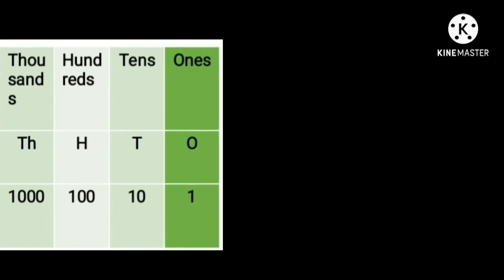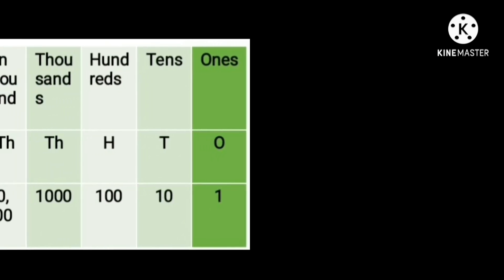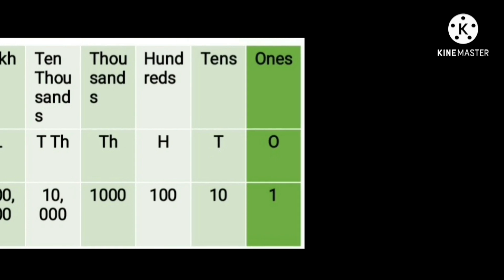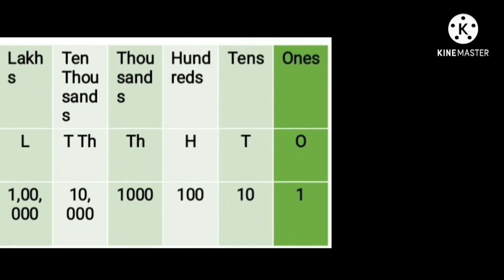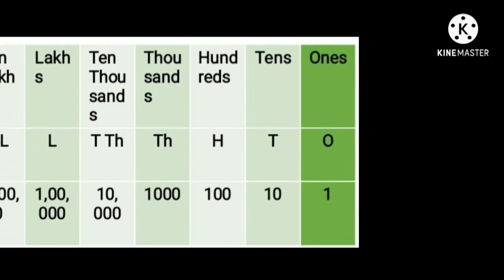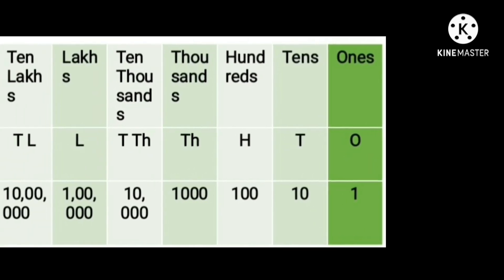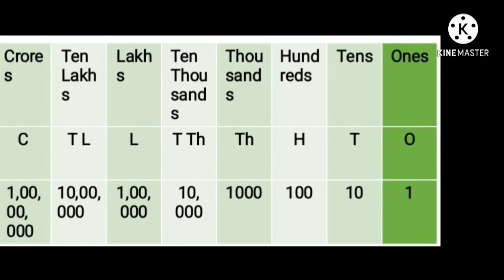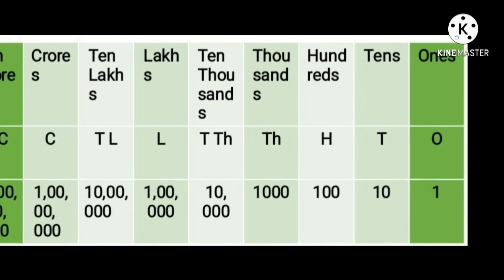The place values in the Indian system are: ones, tens, hundred, thousand, ten thousand. After that: lakh, ten lakh, crore, and ten crore.